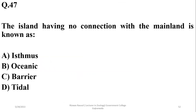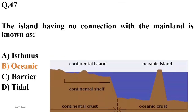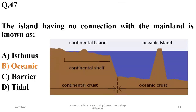The island having no connection with the mainland — you know there are two types of islands: oceanic and continental. Oceanic islands are usually far away from the coastline, so this is the right option.